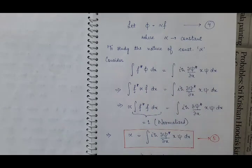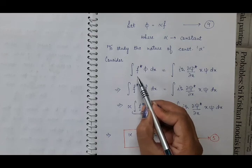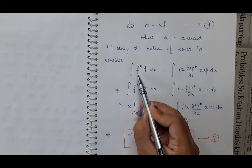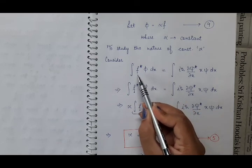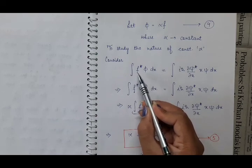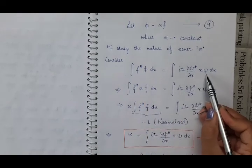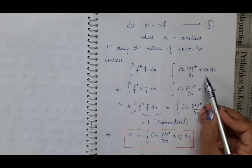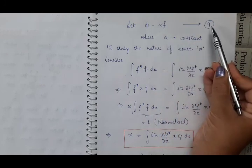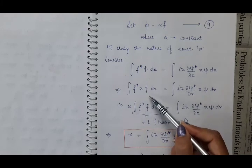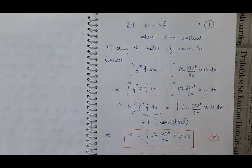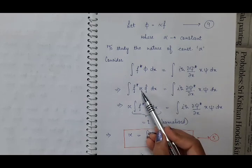Suppose phi and f are related to each other by the relation phi is equal to alpha into f, where alpha is a constant. Now we need to know the nature of this constant — whether alpha is a real quantity, imaginary quantity, or complex. For that, consider this integral: integral of the complex conjugate of function f into phi dx. We are putting phi equal to alpha f because our aim is to study the nature of alpha, so we take alpha outside the integral.